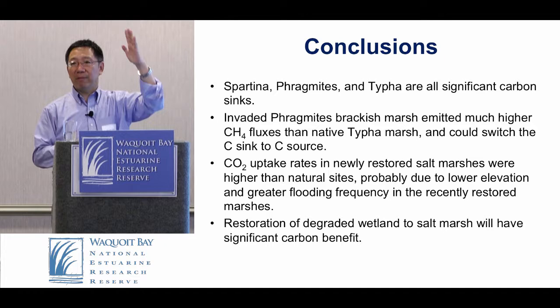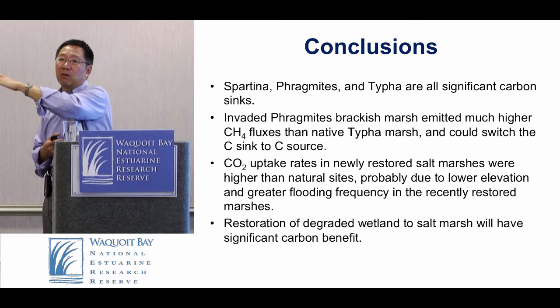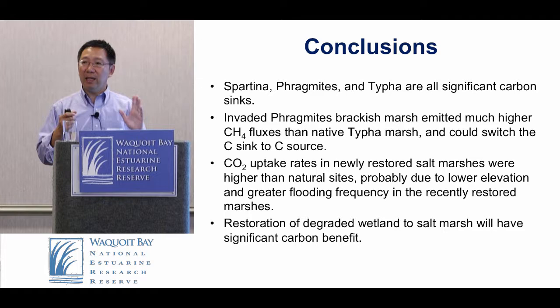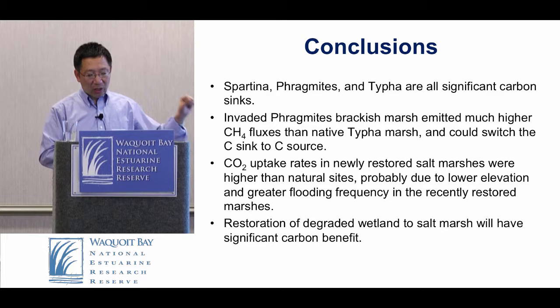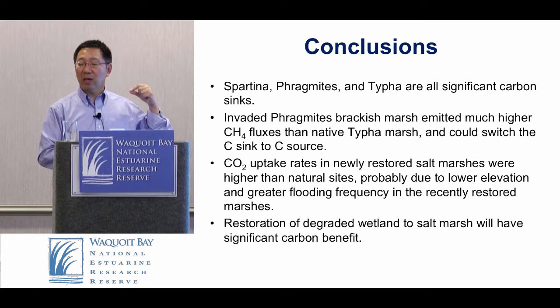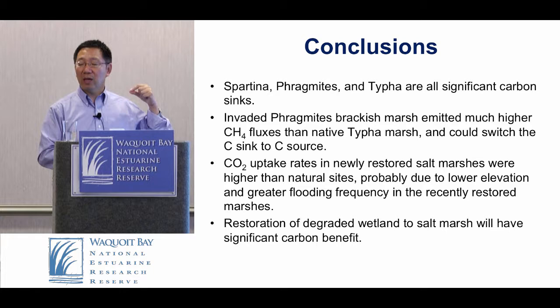So if we draw a curve, initially the carbon rate is very low in the degraded system, then goes up if it's newly restored, and then gradually goes to some equilibrium toward the natural system. The system is dynamic — it's not linear and not just one point of view. There are different phases of restoration. Finally, restoration of degraded wetland to salt marsh will have significant carbon benefit. From our data, there is carbon benefit there, and you'll see how we do feasibility study based on all those data to quantify those carbon benefits and go toward the carbon credit. Thank you very much.